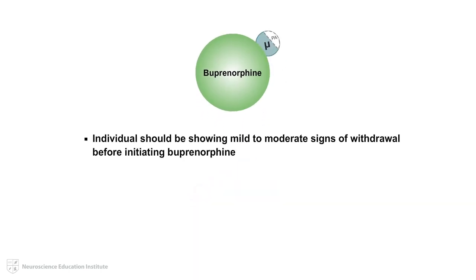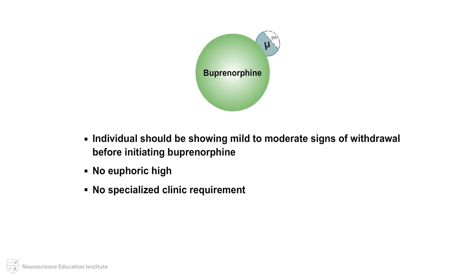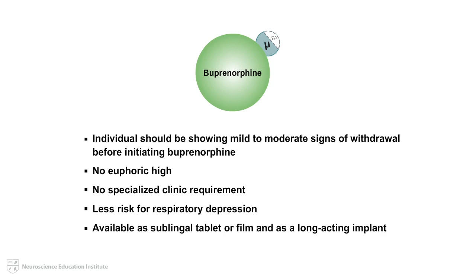For this reason, it is recommended that patients be experiencing at least some mild withdrawal from an opioid agonist, such as methadone, before initiating buprenorphine. As with methadone, buprenorphine does not elicit the euphoric high experienced with heroin, but may prevent symptoms of opioid withdrawal. Unlike methadone, buprenorphine does not need to be administered at specialty clinics, although specialty licensing for the prescriber is required, and is associated with less risk for respiratory depression. Buprenorphine is available as a sublingual tablet and a film, as well as a long-acting implant.